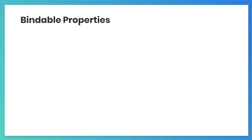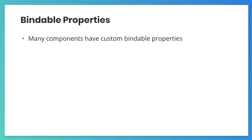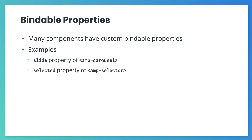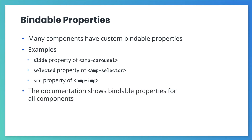Besides the attributes we just discussed, many AMP components also have unique attributes that can be bound to state variables. For example, we can bind the slides property of the amp-carousel component to control the active slide. We can bind the selected property of the amp-selector component to control the selected item. And we can also bind the source property of the amp-image component to change the displayed image. Refer to the amp-bind documentation for a complete list of bindable properties on all AMP components.